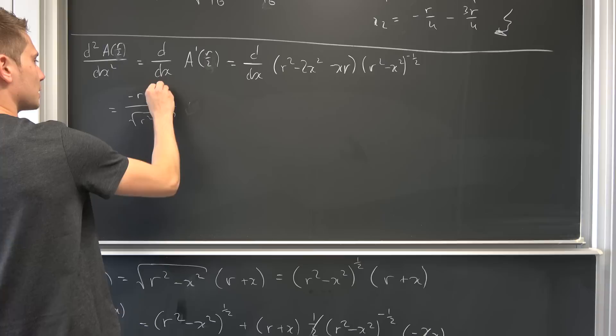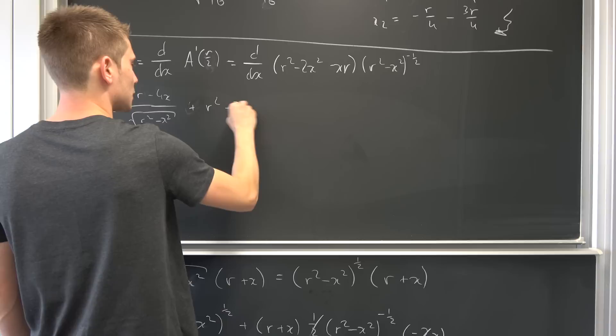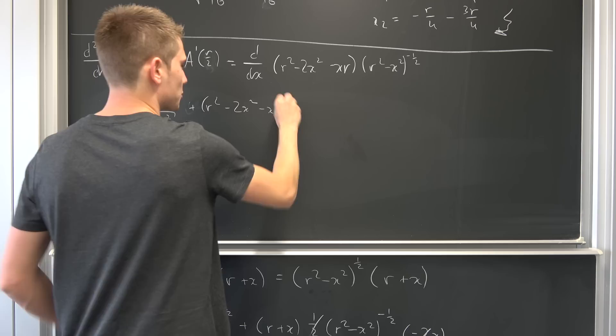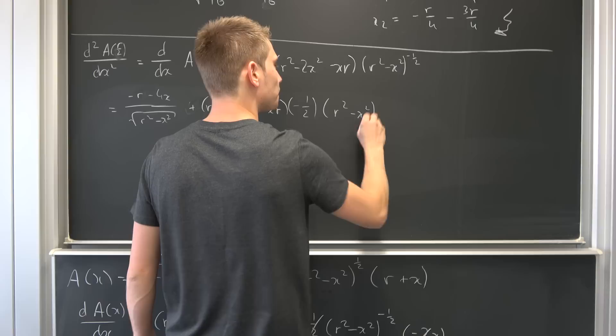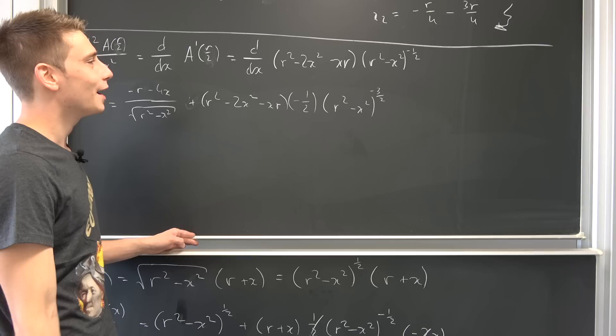And for the second part, this is going to stay so positive r squared negative 2x squared negative x times r, and we would like to differentiate this. So taking the 1 half down, the negative 1 half reducing the power by 1, once again r squared negative x squared to the negative 3 halves, and taking the inner derivative of this thing. So this makes negative 2 times x.